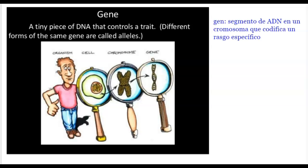Different forms of the same gene are called alleles. Here's an organism, a person. Inside the organism are cells. Inside the cells are chromosomes. Inside the chromosomes are genes.